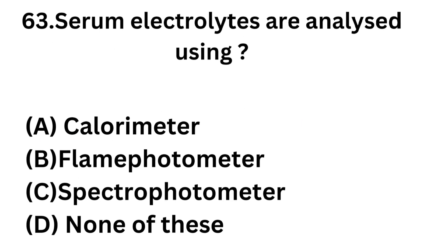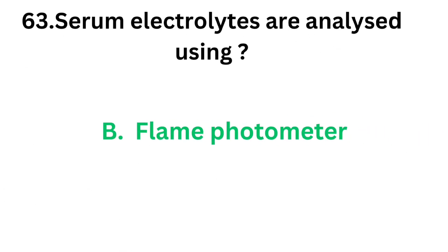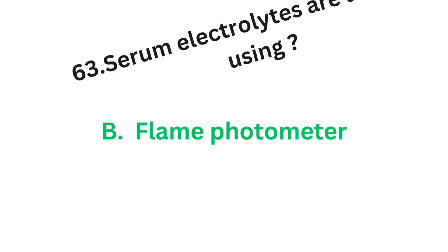Question number 63: Serum electrolytes are analyzed using — Option A: Colorimeter. Option B: Flame photometer. Option C: Spectrophotometer. Option D: None of these. The correct answer is option B, flame photometer. Serum electrolytes are analyzed using flame photometer. This is a common question asked in many question papers.